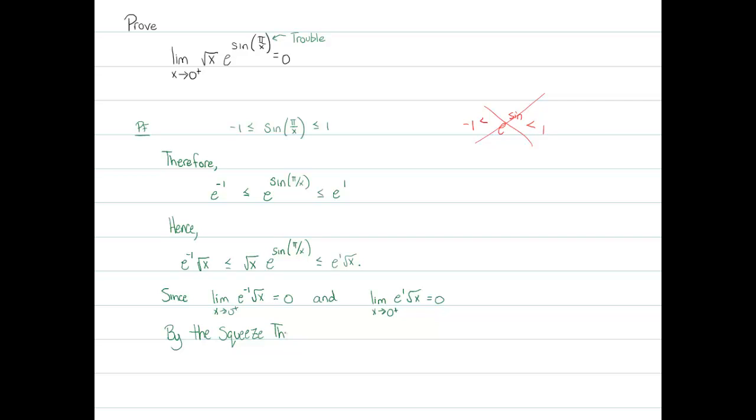There we go. So, the limit as x approaches zero from above of the square root of x e to the sine of pi over x must therefore be zero. That is the proof of it. There's nothing else to that proof.